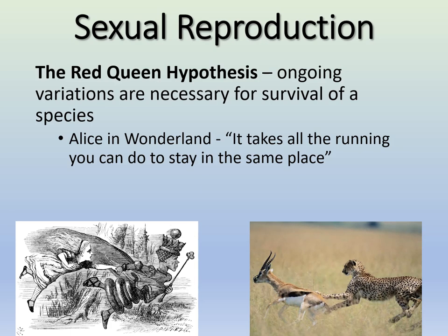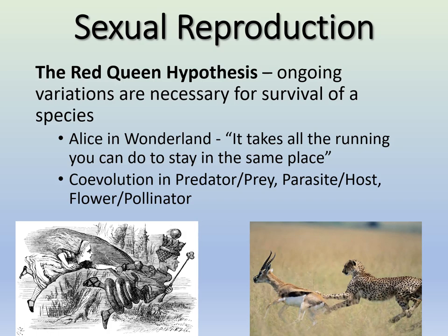There's an interesting theory called the Red Queen Hypothesis that comes from Alice in Wonderland. It states that you need ongoing variation for the survival of a species. The quote is: 'It takes all the running you can do to stay in the same place.' We have variation within individuals, and those variations interact with other individuals and the environment — this is called co-evolution. You need variation to survive because your environment is evolving, as are the other organisms around you.